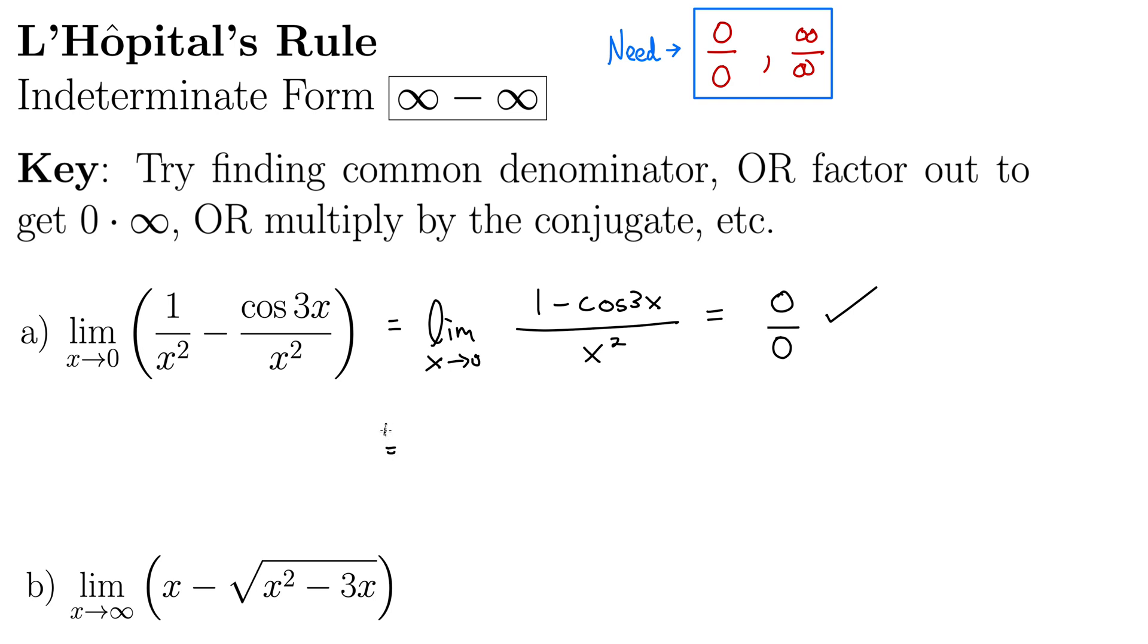So this is equal by L'Hôpital's rule. We're still doing the same limit as x goes to zero. We hit it with the derivative. The derivative of cosine is negative sine. So negative cosine goes to positive sine 3x times the derivative of the inside. That's the chain rule. So we have another three here over 2x. The derivative of the denominator is 2x. Run it through the limit again. What do we get? Zero over zero again.